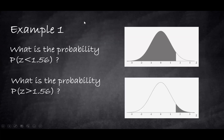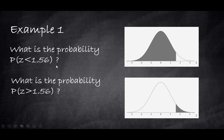Let's start with example number one. What is the probability that Z is less than 1.56? That will be finding the gray area under the curve to the left. Another example we'll explore is finding the probability that Z is greater than 1.56, which is the gray area to the right under the curve.